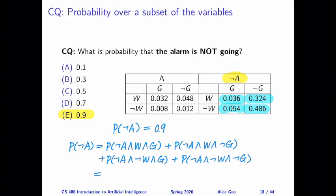And W and G are both false. So adding up all four numbers, 0.036 plus 0.324 plus 0.054 plus 0.486, which is 0.9.